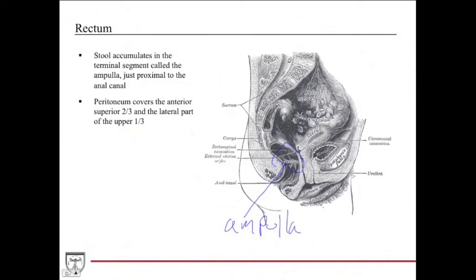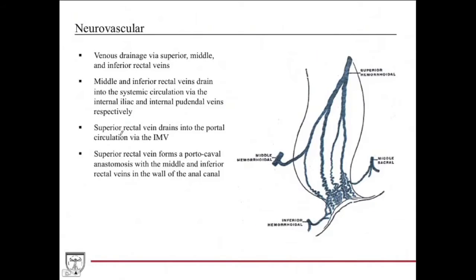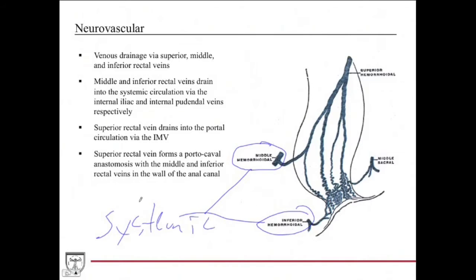Venous drainage is via the superior, middle, and inferior rectal veins. The middle and inferior rectal veins — also called the medial hemorrhoidal and inferior rectal — both drain via the systemic circulation. The middle goes to the internal iliac, and the inferior goes to the internal pudendal, which both end up in the iliac veins and then into the inferior vena cava.